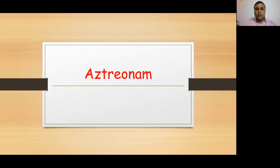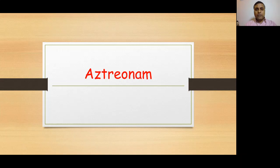Hello dear students. Hopefully my previous lectures regarding cell wall synthesis inhibitors have helped you in understanding the mechanism of cell wall synthesis in bacteria, the classification of cell wall synthesis inhibitors into beta-lactam and non-beta-lactam antibiotics, and the mechanism of action, clinical uses, pharmacokinetics, and adverse effects of penicillins, cephalosporins, and carbapenems. In today's lecture we'll be talking about aztreonam, which is one of the beta-lactam antibiotics — the last group of beta-lactam antibiotics we will cover.